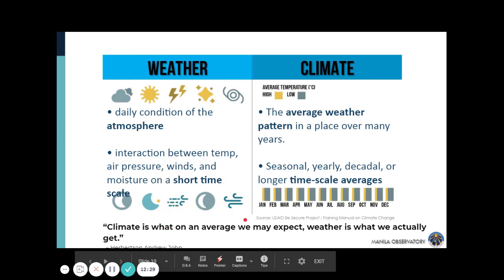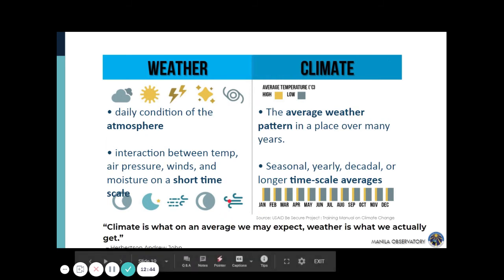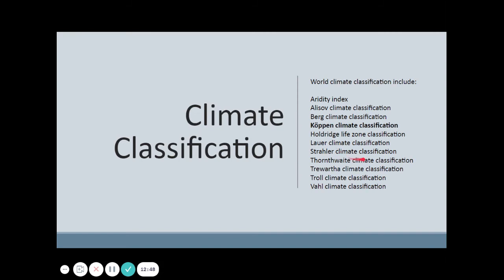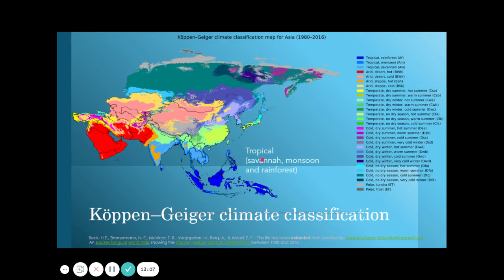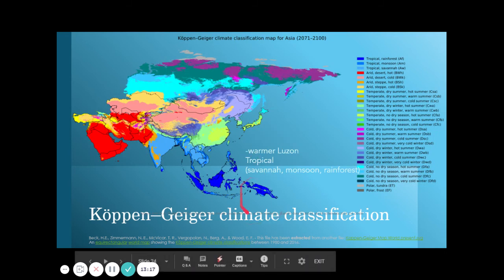Looking at the Köppen climate classification — the one most familiar to us — our country has tropical savanna, monsoon, and rainforest types. In the future, it is projected to remain tropical, with not much change in climate type, but it will be warmer. Our country is near the equator and our season is mostly summer, but our climatology is actually controlled by our rainfall climatology.